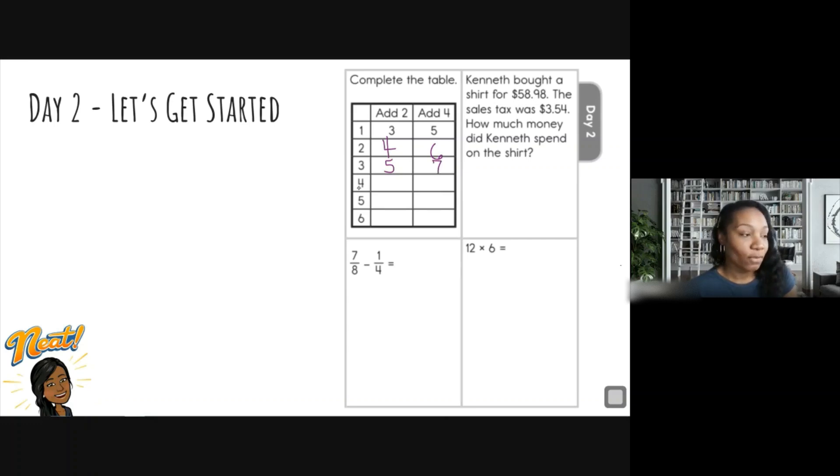All right. Four, four plus two is six. And four plus four is eight. Five plus two is seven. And five plus four is nine. All right. Six plus two is eight. And six plus four is ten. So we just completed that entire table by following the rules. All right. Let's go to question number two.